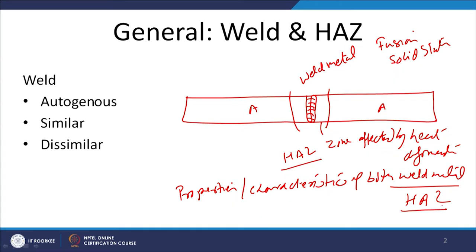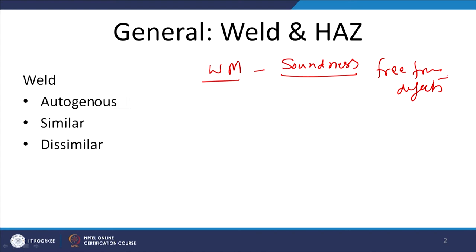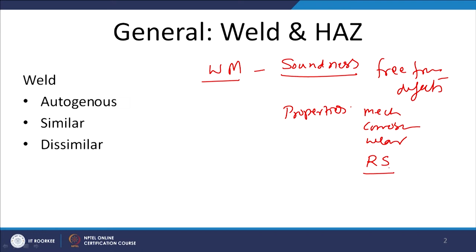What are the things we have to look into regarding weld metal properties? The first thing is its soundness — whether it is free from defects and discontinuities or not. And if it is free, what are its properties in terms of mechanical properties, corrosion properties, wear properties, and what kind of residual stress development occurs in the weld metal. Accordingly, we will say whether the weldability of the metal from the weld metal point of view is good or poor.